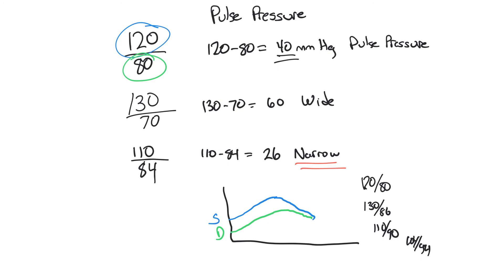And narrowing pulse pressure is a pretty good indicator of shock. Remember, the top number is how strong the ventricles are contracting, and the bottom number is how vasoconstricted your peripheral systemic vascular resistance is. Hope this helps. Thanks.